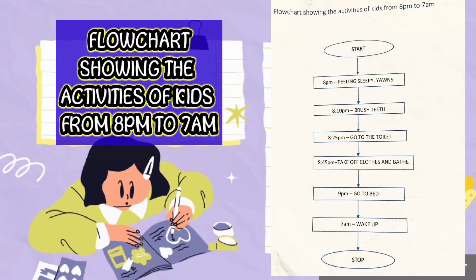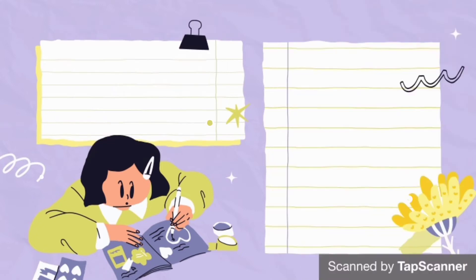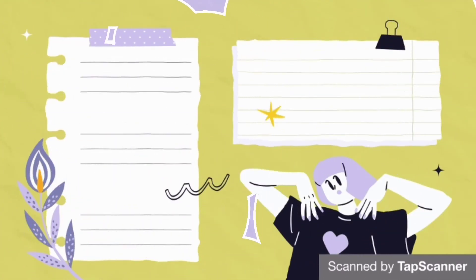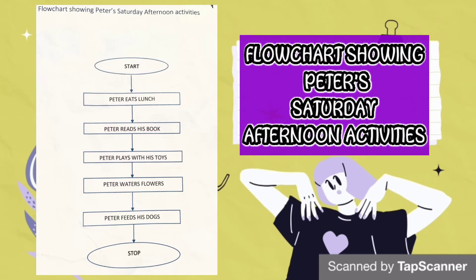Then at 7am, which is the next morning, she woke up, shining. The last shape after waking up is the oval shape, which is the stop.